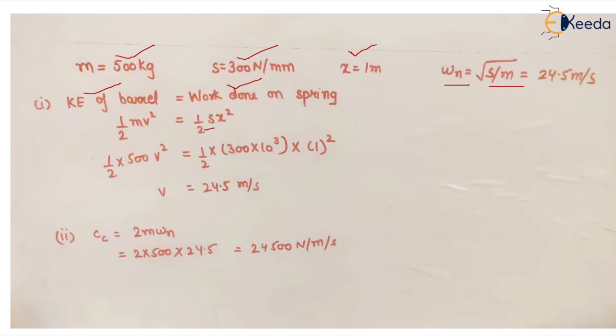We know the value of mass, we know the value of the spring stiffness, we know x, so we can find the velocity. So this is the initial kinetic energy of the barrel or the kinetic energy of the gun.